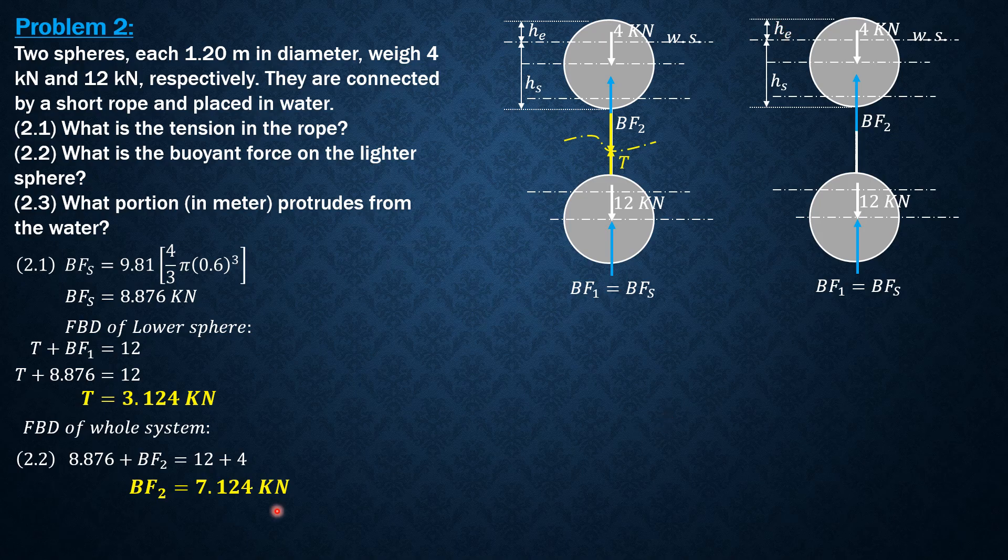Therefore, we use buoyant force in the lighter sphere equals specific weight of water times volume submerged, which is a spherical segment of one base. The volume of spherical segment of one base is given by π hs² / 3 × (3r - hs). So BF2 7.124 = 9.81 × π hs² / 3 × (3 × 0.6 - hs).